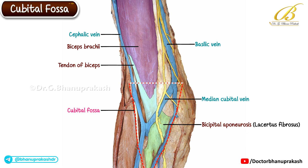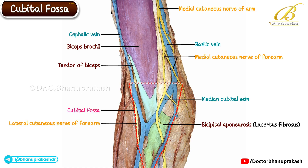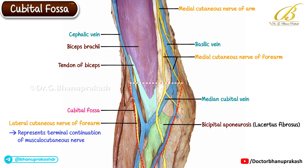Next, coming to the cutaneous nerves: on the medial side we can identify the termination of the medial cutaneous nerve of the arm and the medial cutaneous nerve of the forearm. On the lateral side, passing just behind the cephalic vein, is the lateral cutaneous nerve of the forearm, which represents the terminal continuation of the musculocutaneous nerve. This image beautifully demonstrates the superficial anatomy of the cubital fossa and its clinical importance, particularly in venipuncture procedures.